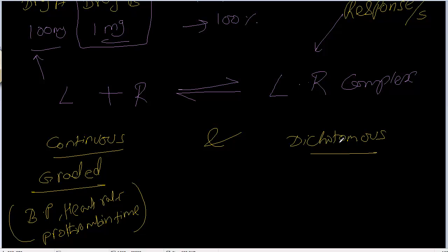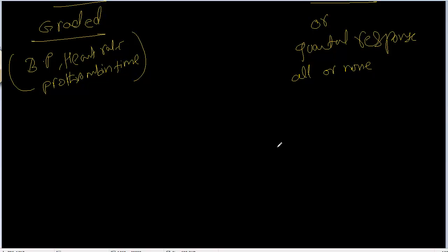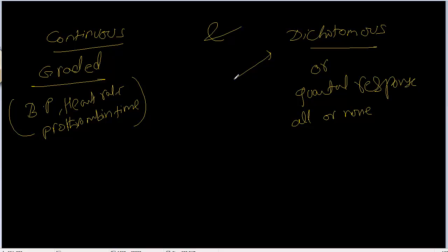There are some responses called dichotomous responses, also known as quantal responses. These are also called all-or-none responses. We call them all-or-none because the response is either present or absent.